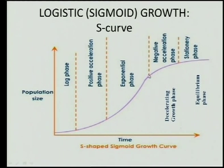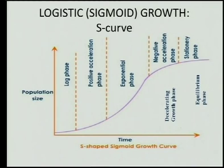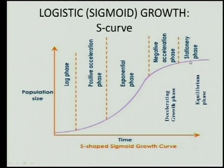Up to that point it's very much like a J curve, but then the rate of increase starts decreasing. The question is why — and the answer is environmental resistance. When there are too many individuals in the environment, food becomes scarce, water becomes scarce, there are too many of them, and toxins from excretion are released. All of a sudden there's a stationary phase where the curve flattens.